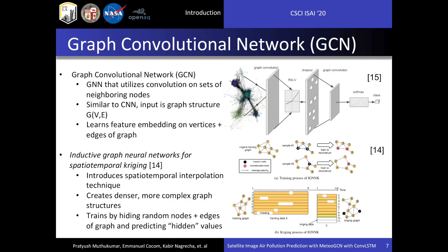We will be focusing on a more complex version of the GNN structure: the graph convolutional network, or GCN. Similarly to how a GNN resembles a traditional ANN, the GCN is similar to the traditional CNN. GCNs use convolution filters on sets of neighboring nodes and weighted directed graphs as inputs, where graphs contain sets of vertices and edges. Neighboring nodes are defined as nodes connected by edges with the smallest weight. The GCN learns feature embeddings on the vertices and edges of the graph. We can construct graphs of meteorological sensor data for each time period — for example, daily graphs — and use GCNs to predict daily data in the future.